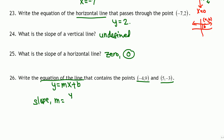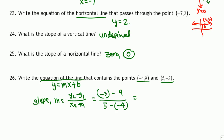Change in y coordinates means y2 minus y1 over x2 minus x1. So we get negative 3 minus 9 over 5 minus negative 4. That gives us negative 12 over 9, since 5 minus negative 4 is 5 plus 4 equals 9. Simplifying: 3 goes into 12 four times and into 9 three times, giving us negative 4 thirds.